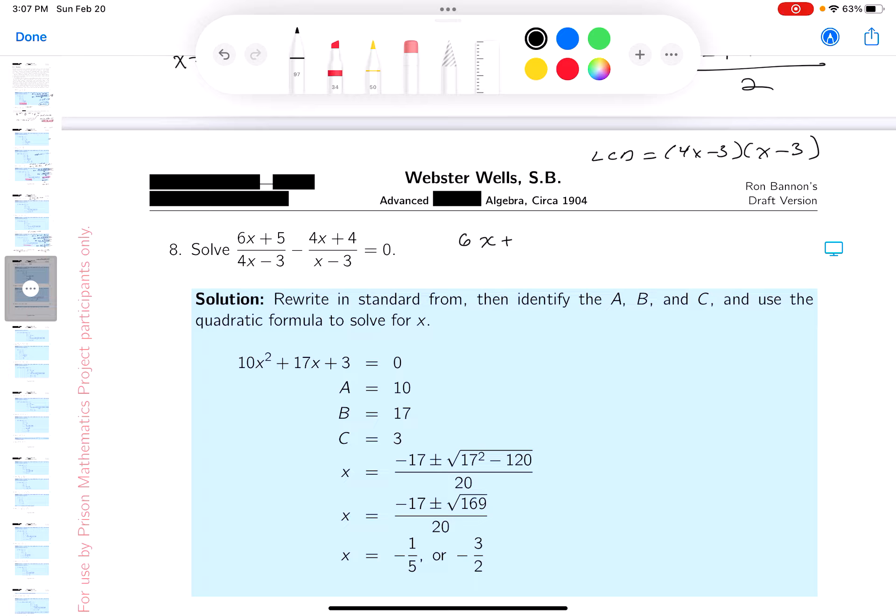That's going to be 6x plus 5 times x minus 3 minus 4x plus 4 times 4x minus 3, and 0 times anything is 0. Let's simplify.